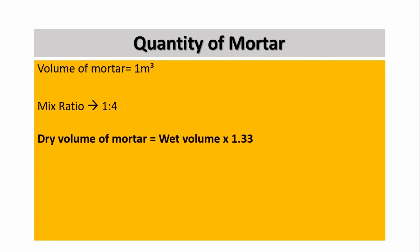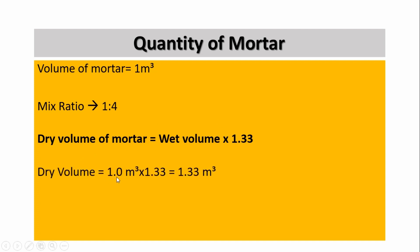Dry volume of the mortar equals the wet volume multiplied by 1.33. Here 1.33 is the multiplication factor, and it can range from 1.30 to 1.35 — you can take any value like 1.31, 1.32, 1.33, 1.34, or 1.35. This is due to bulkage of sand. Therefore, dry volume equals 1 multiplied by 1.33, which is equal to 1.33 meter cube.